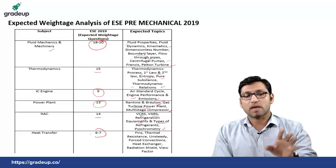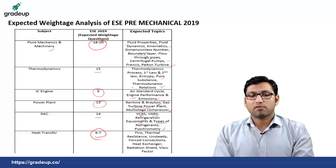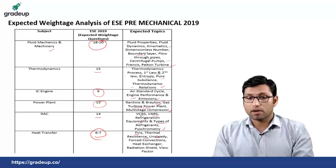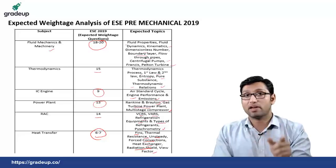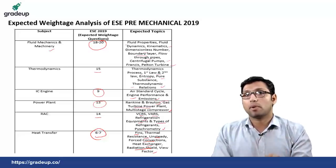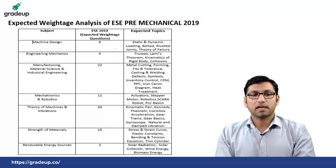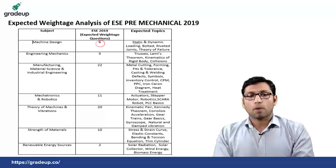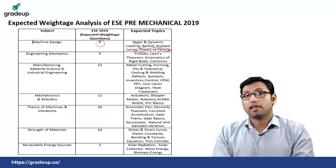From heat transfer there can be 6 to 7 questions, with not much variation expected. Questions can be from fins and thermal resistance, unsteady heat transfer, forced convection, heat exchanger, radiation shield and view factor — since radiation shield and view factor were not asked in 2017 and 2018, there is a probability questions can be asked from those topics. From machine design there can be around 6 questions from static and dynamic loading, bolted and riveted joints and theory of failure — theory of failure was not asked previously so it may be asked this time.